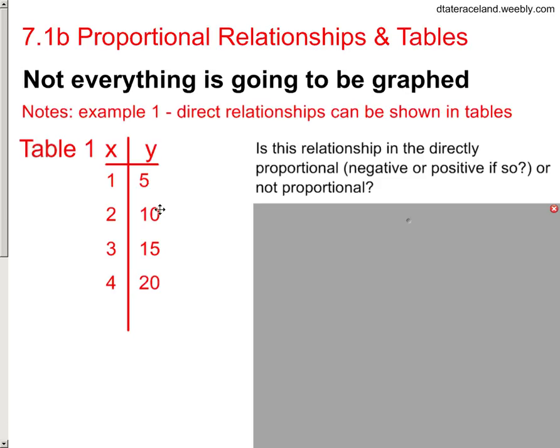Basically, the question is going to be this. They'll give you the data in a table, and they want to know, is it directly proportional? And if it is, is it a positive or negative relationship? Since it's not graphed, we can't just look at the graph. We've got to be able to determine it all from the table.